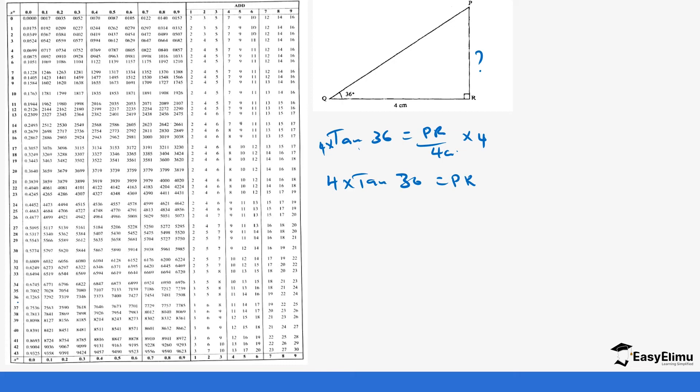So we go to 36. In 36 we get 0.7265 times four so that we can be able to get our PR. So 0.7265 times four will give us 2.906. So these are the values for PR.